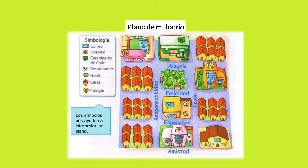¿Pero este es un plano? Piensa, ¿será un plano? Sí, este es un plano. En este plano, fíjate que lo puedes ver desde arriba, desde una vista aérea. En esta imagen vamos a observar dos cosas más que tienen los planos. Primero, tiene un título. Y segundo, un recuadro que va al costado del plano, o también puede ir abajo, que tiene un nombre y se llama simbología.